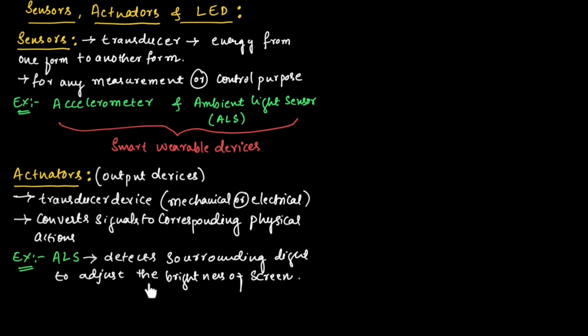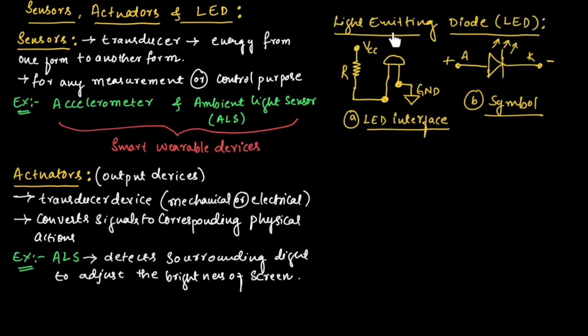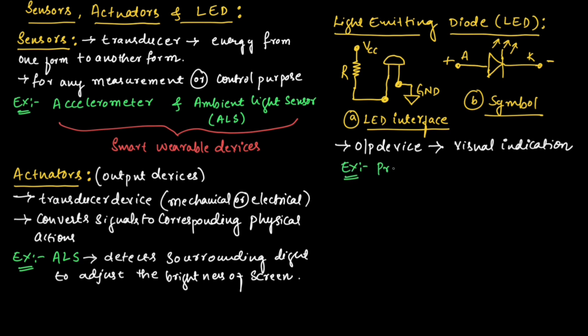Now let us understand light emitting diode, commonly known as LED. LED is an important output device used for visual indication, such as the presence of power, battery low, charging of battery, etc.